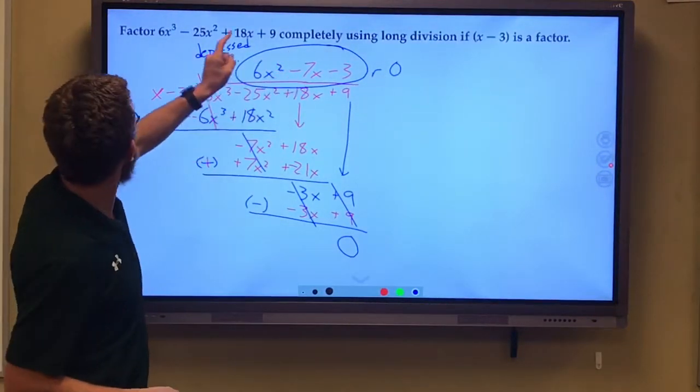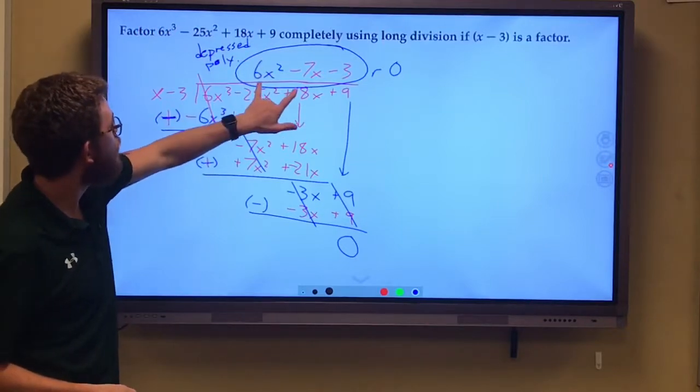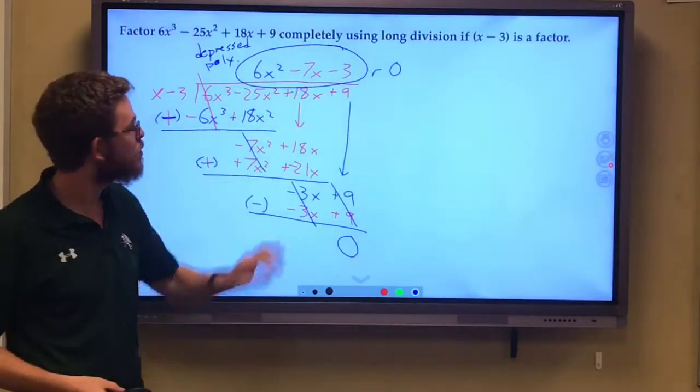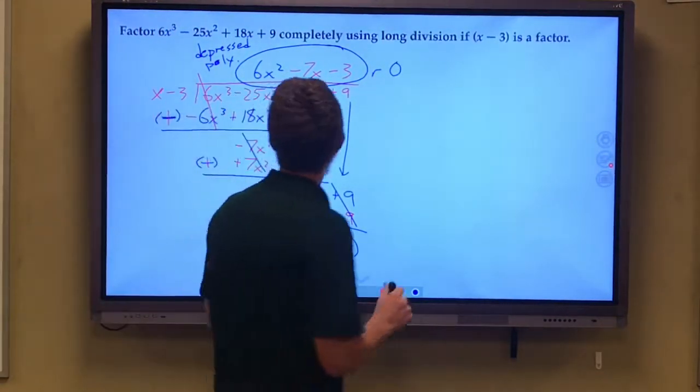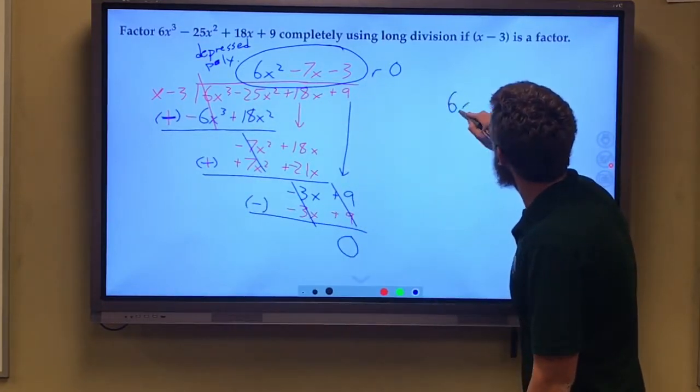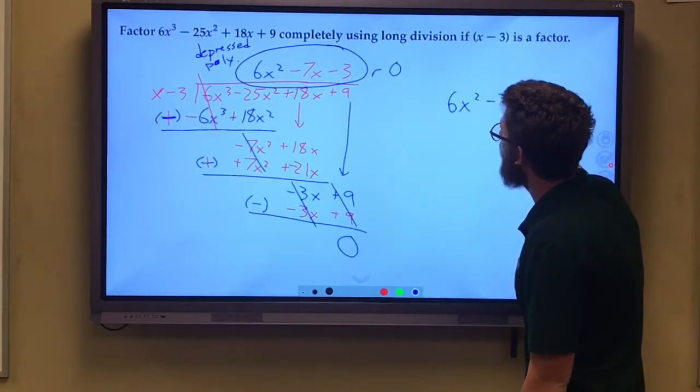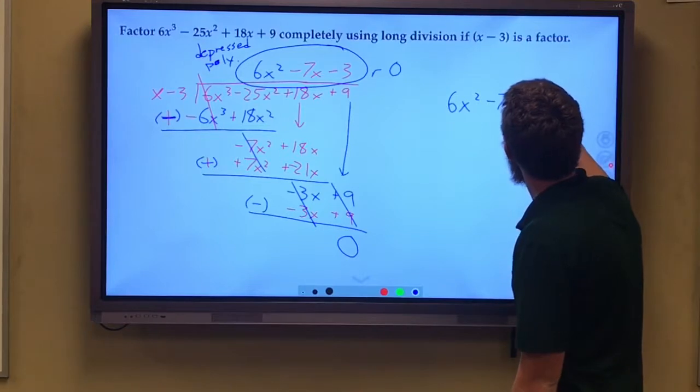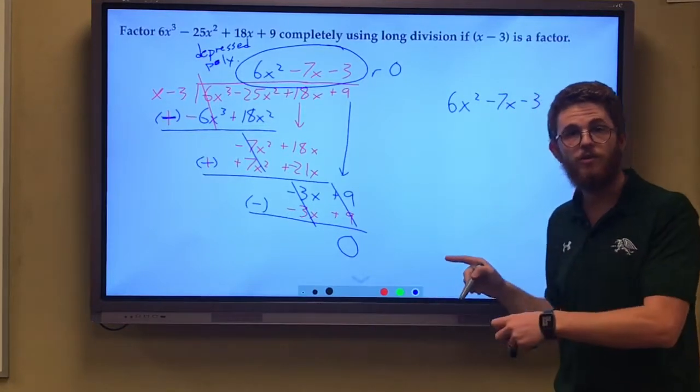And it says factor this completely. So we want to finish factoring this. We want to factor what's left over. I have this 6x squared minus 7x minus 3 left over.